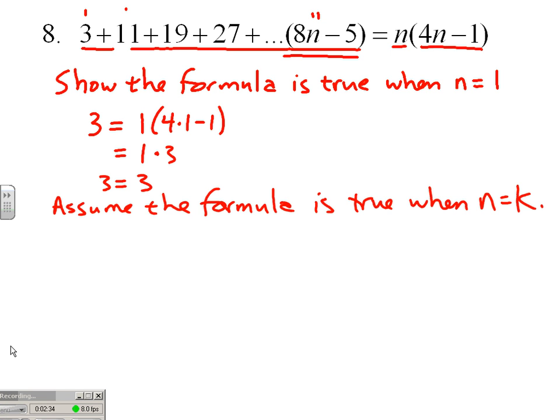This may be the toughest mindset to get through because n and k, what's the difference? A big difference. n refers to any positive integer, any domino in our list, and k just refers to one particular domino in the list. k is just saying hey, there is a domino that falls out there somewhere.